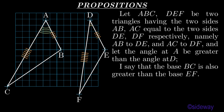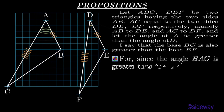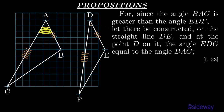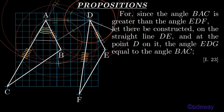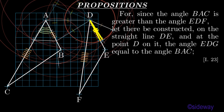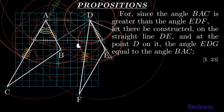I say that the base BC is also greater than the base EF. For, since the angle BAC is greater than the angle EDF, let there be constructed on the straight line DE, and at the point D on it, the angle EDG equal to the angle BAC, by Book 1 Proposition 23.